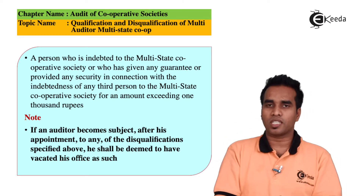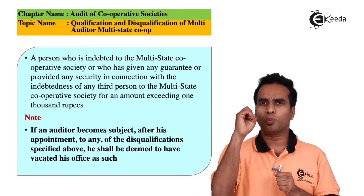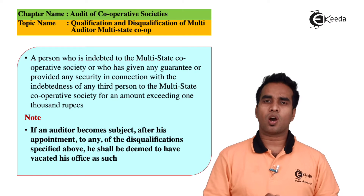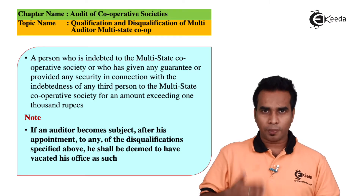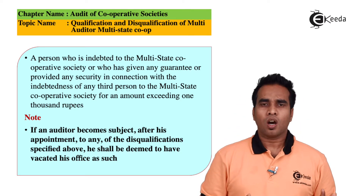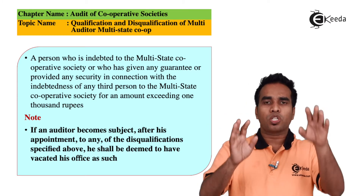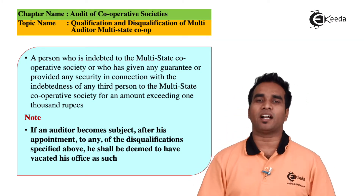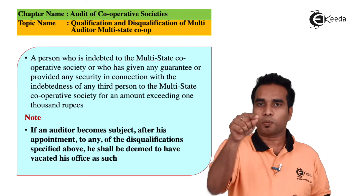There is also an important note on the screen. If a person has already been appointed as auditor and thereafter breaks these provisions — for example, becomes a member, employee, or creditor of the society for more than one thousand rupees — then they must vacate their position as auditor.